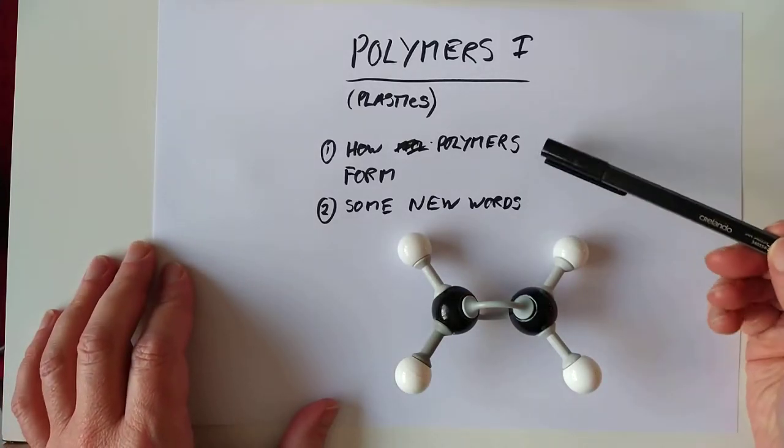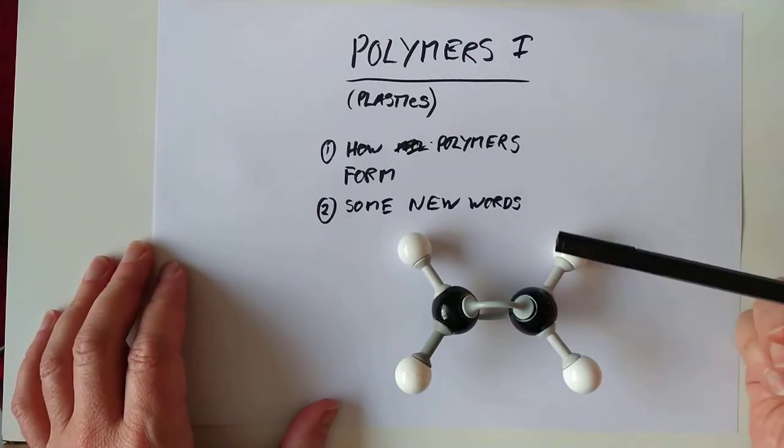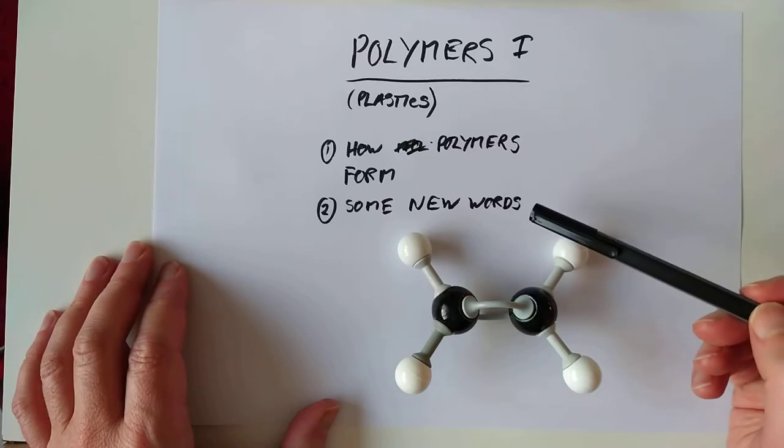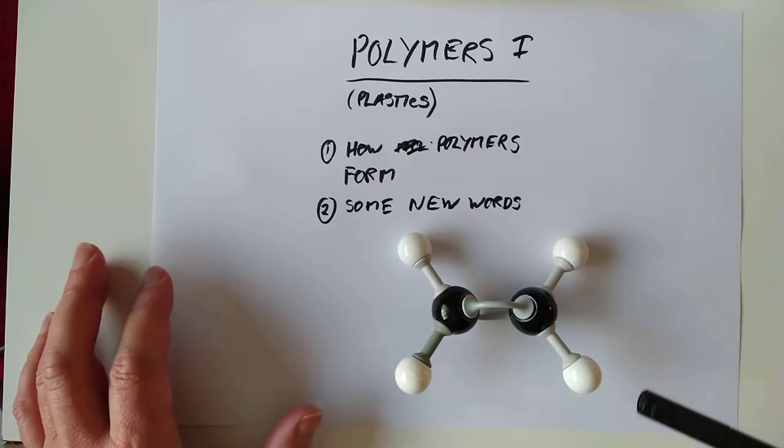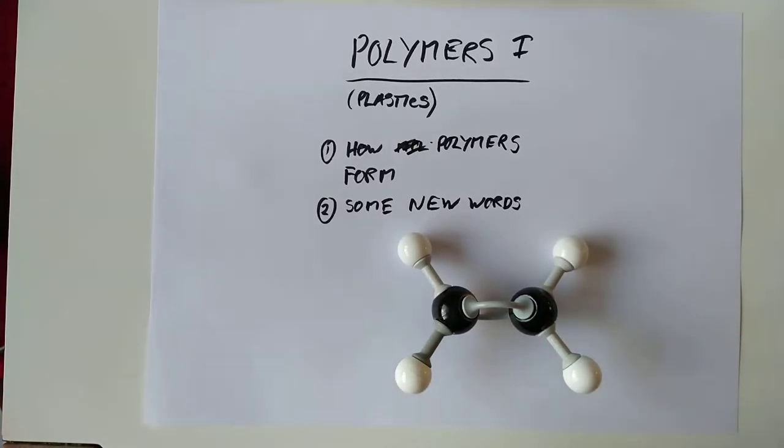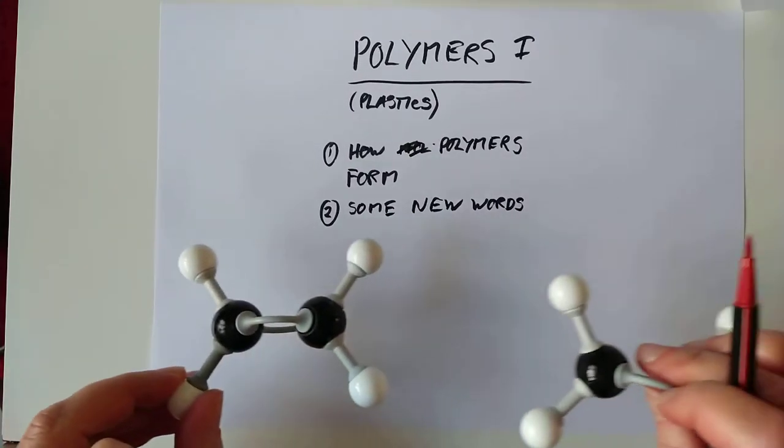We're going to have a look at two different learning outcomes today. We're going to have a look at how polymers are actually formed, and we're going to have a look at some new words to do with polymers. Before we go any further, let's bring in some more ethene molecules.